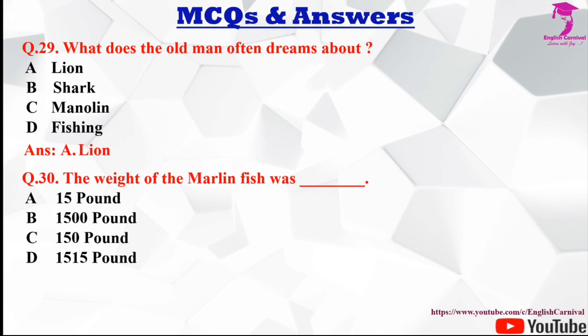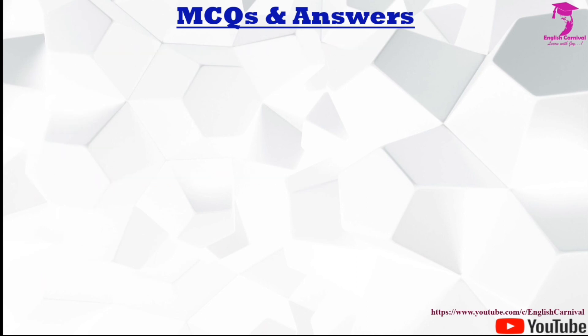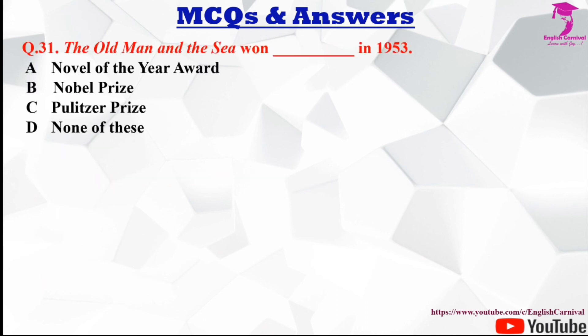Question number thirty: The weight of the marlin fish was dash. Options are A 15 pounds, B 1500 pounds, C 150 pounds, and D 1515 pounds. The correct answer is B, 1500 pounds.